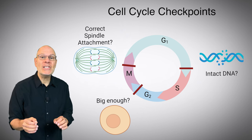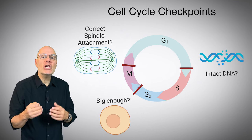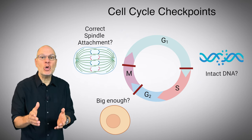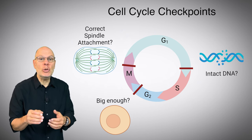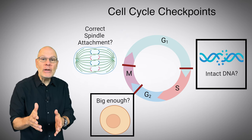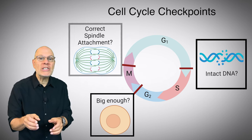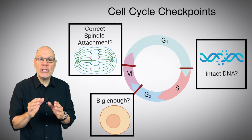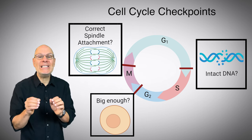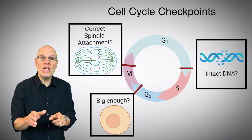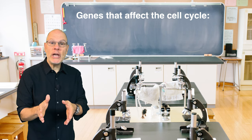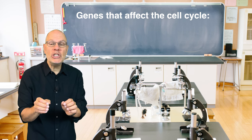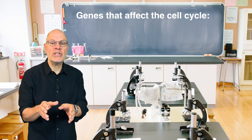During the cell cycle, a dividing cell has to pass through checkpoints. A checkpoint is just what it sounds like. The cell checks for certain internal conditions. These conditions include cell size, the integrity of replicated DNA, or the presence of certain structures inside the cell. If these conditions are met, the cell proceeds through the checkpoint and continues to divide. If not, cell division pauses.